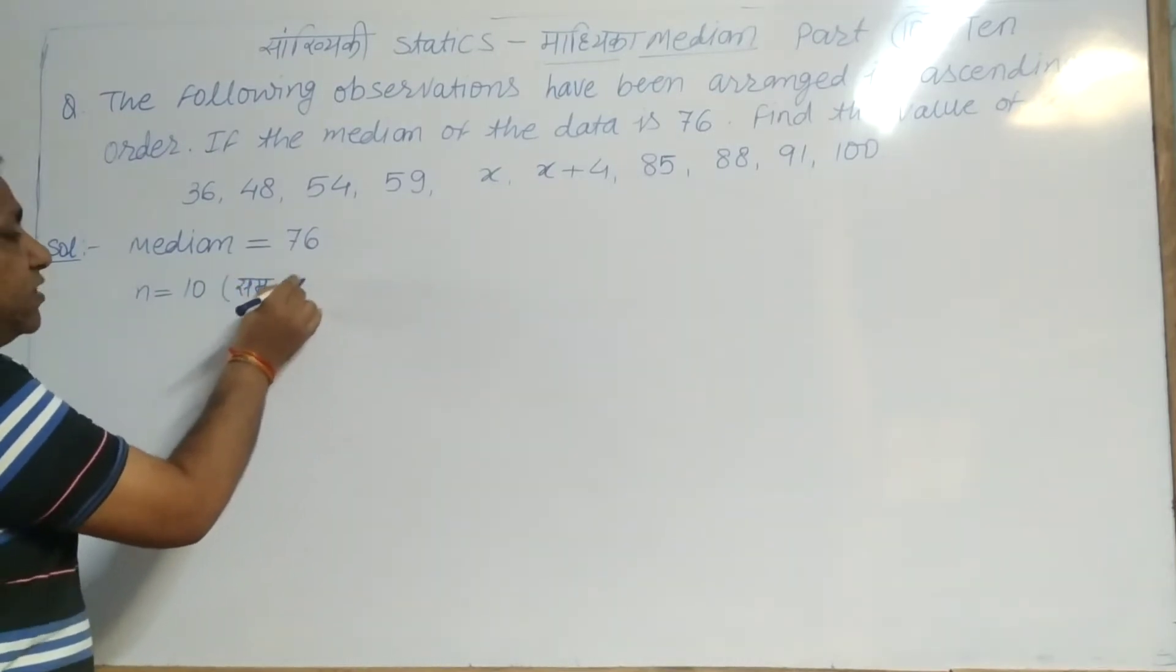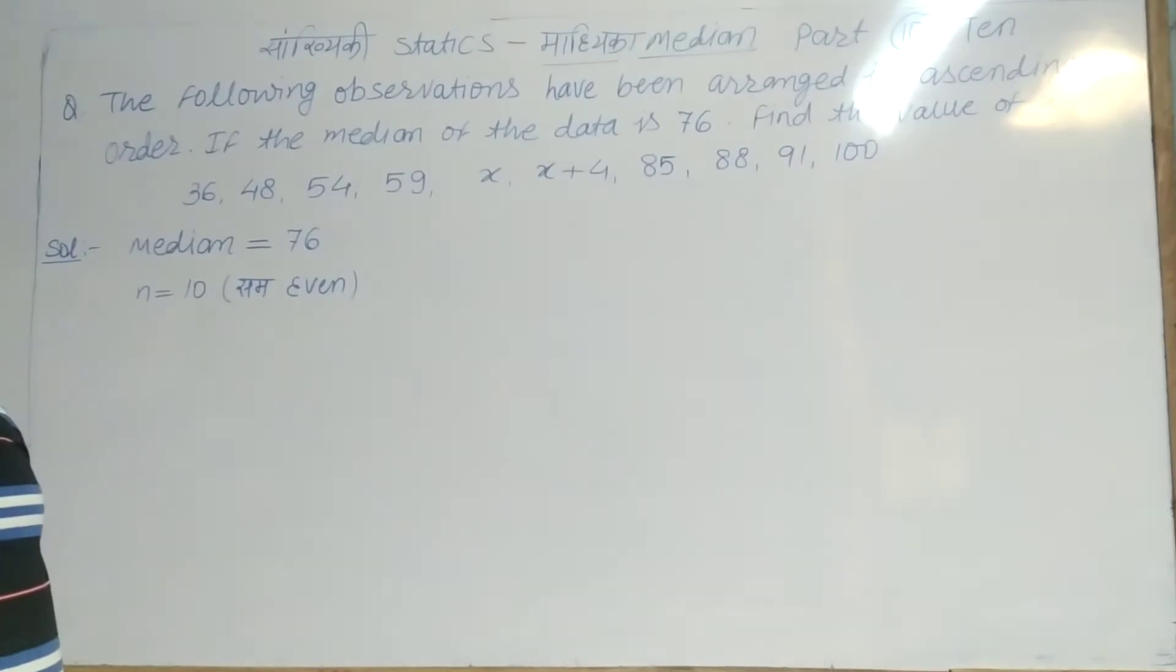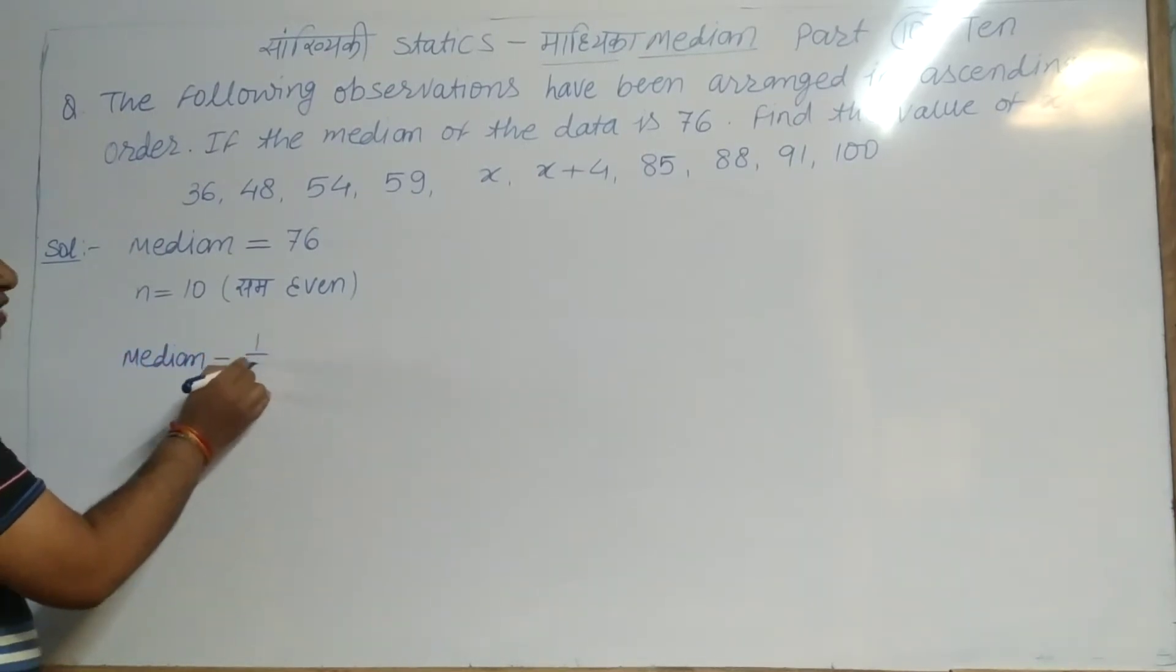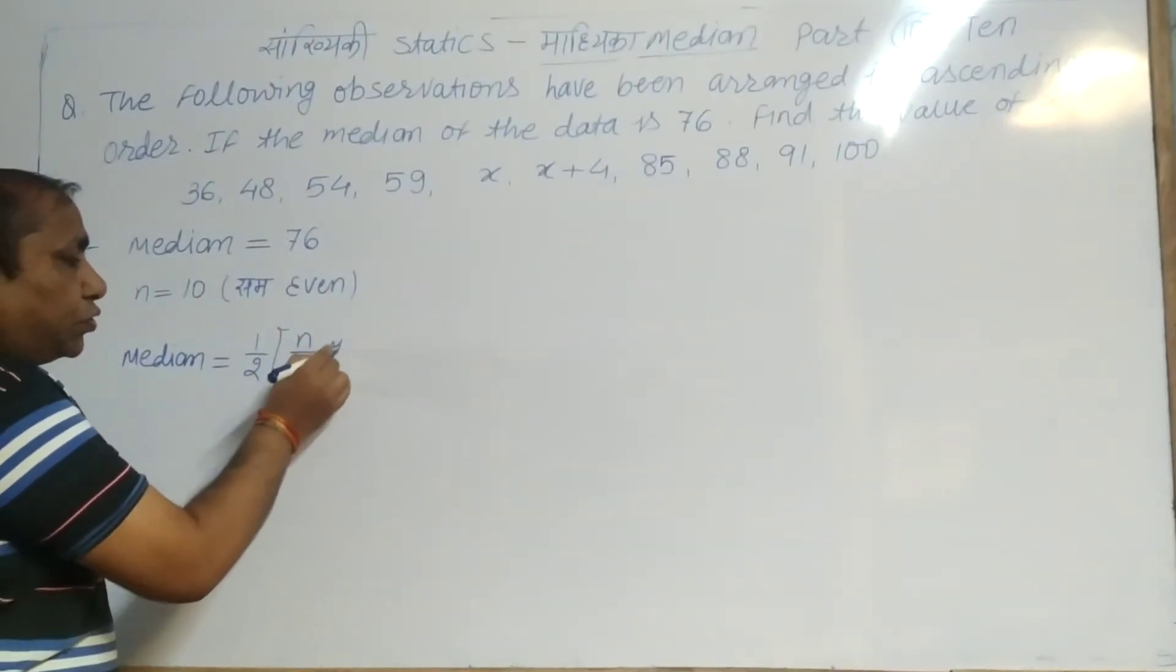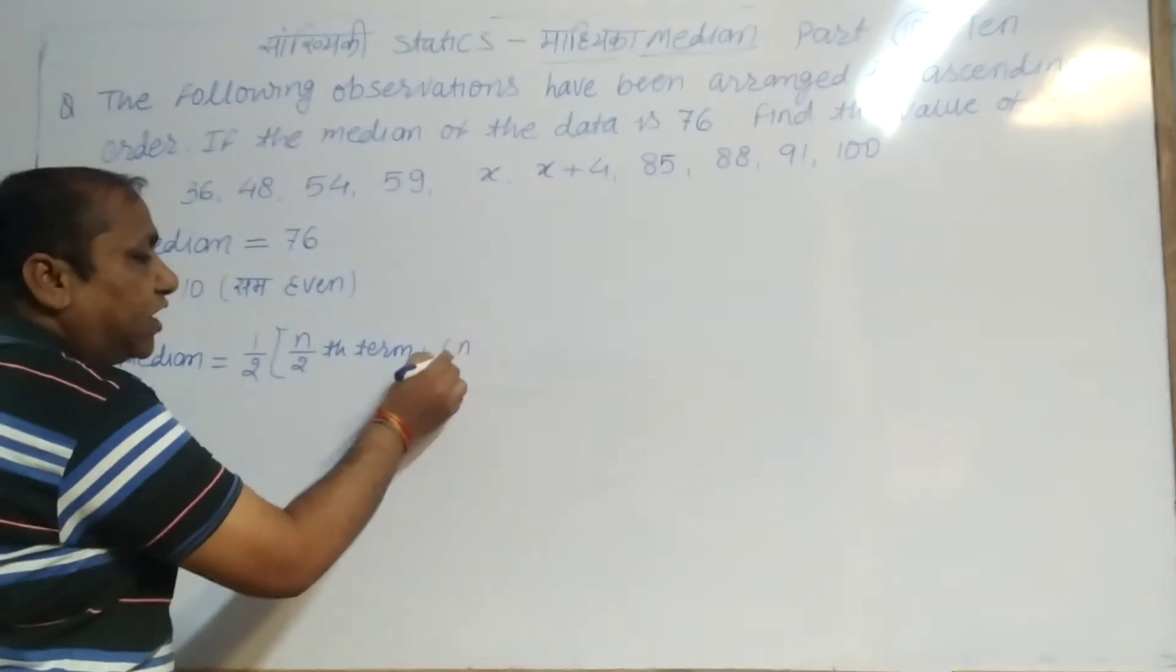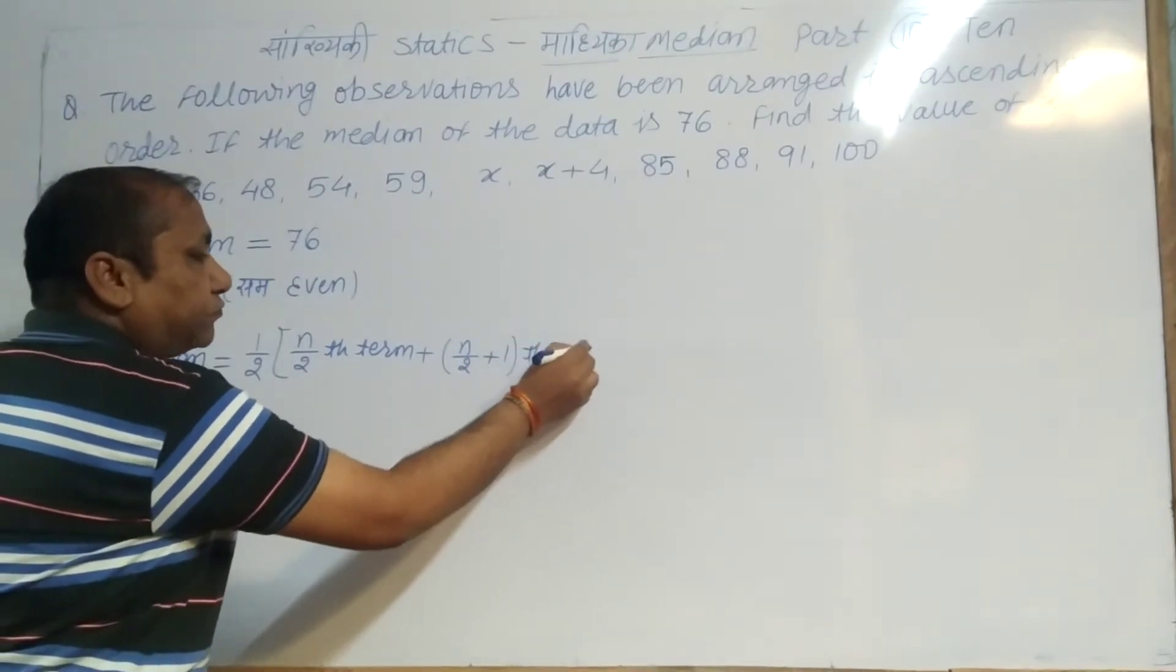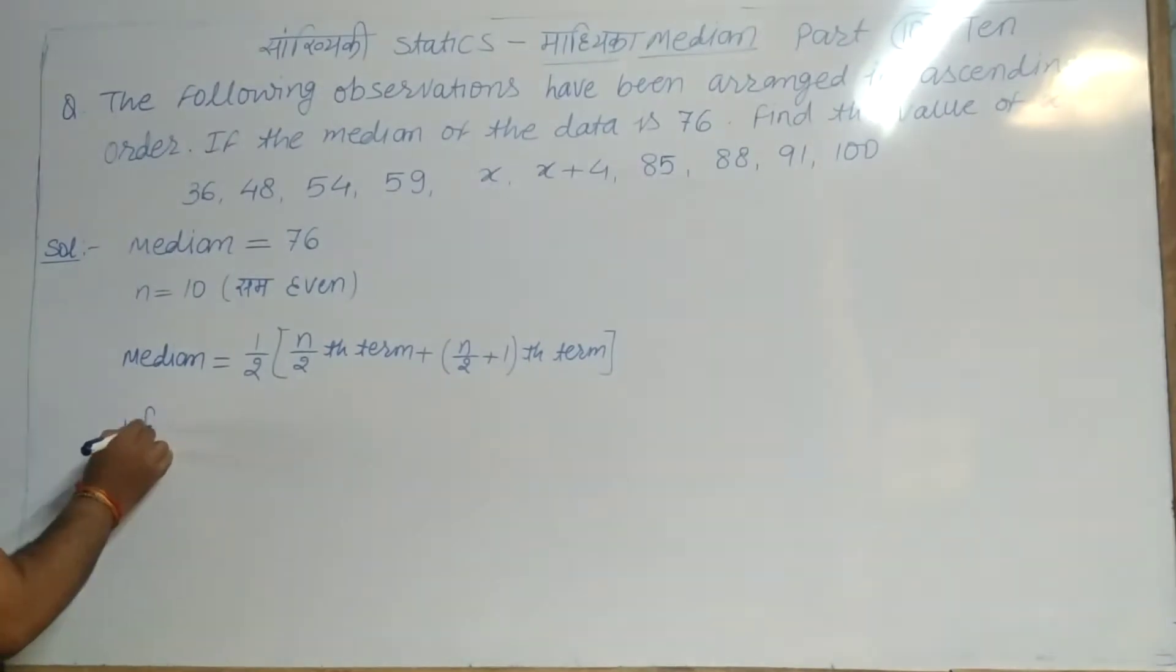Since we have an even number of terms, what is the formula for median? Remember, for even number of terms, median equals 1/2 times (n/2 term plus n/2 plus 1 term).